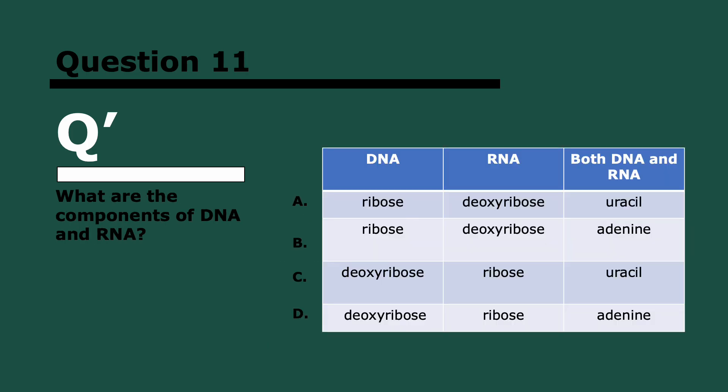Question 11. What are the components of DNA and RNA? Three, two, and one. D. I think most of you probably guessed that it was between C and D. DNA is deoxyribose, RNA is ribose, it's in the name. Both of them have adenine, whereas uracil is only in RNA.